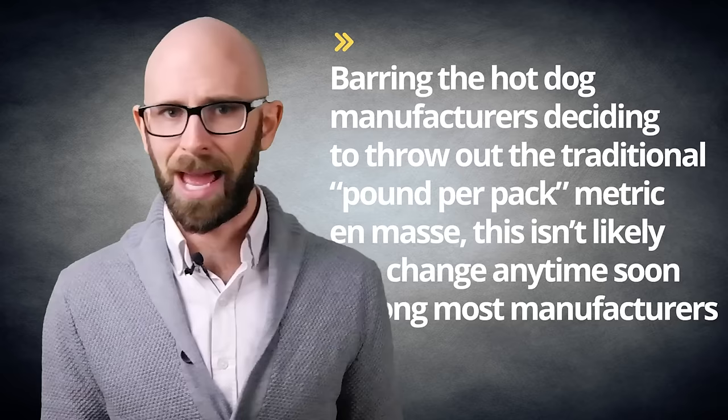However, as mentioned, hot dogs are sometimes sold in packs of 8, often labeled as jumbo hot dogs, with the weight still usually coming out at a pound. But the 10 to the pound rule is by far the most popular, whether because that's what people are used to, or because the bread to meat ratio is simply to the liking of the masses when the dogs are 1.6 ounces. So, barring the hot dog manufacturers deciding to throw out the traditional pounds per pack metric en masse, this isn't likely to change anytime soon among most manufacturers. As with all things though, of course there are exceptions.